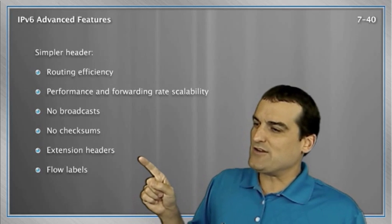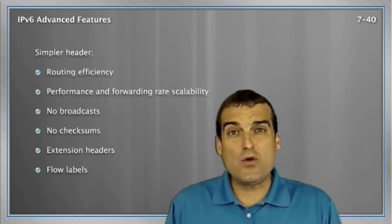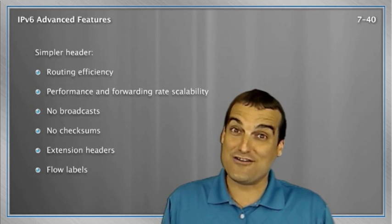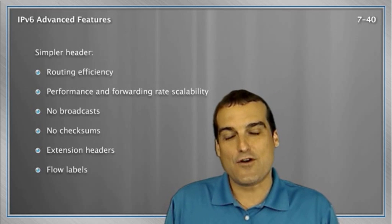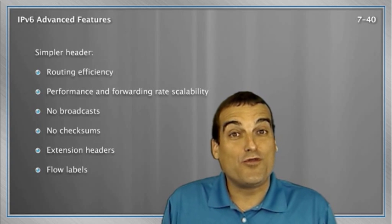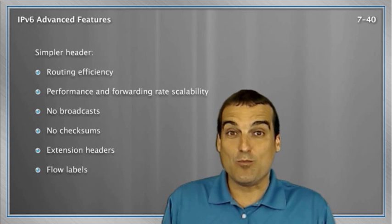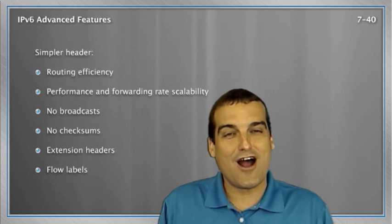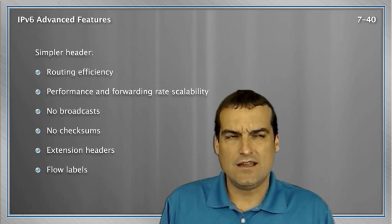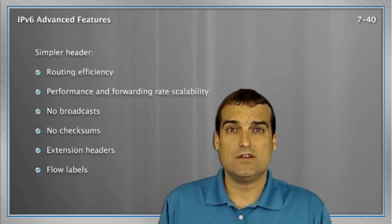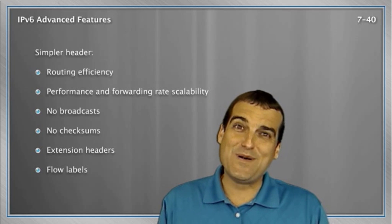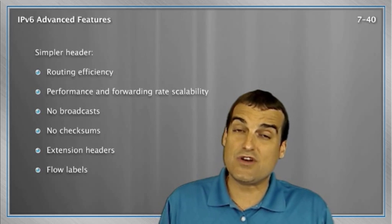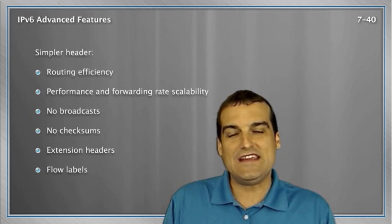Something else to be aware of is the beautiful simplification in IPv6 compared to IPv4. They looked at some of the headaches with IPv4 and engineered great enhancements. For instance, broadcasts — we know that broadcasts can be pretty problematic in an IPv4 world. Well, thanks to IPv6, broadcasts go away. Think the dodo bird — the broadcast is extinct in our IPv6 networks.